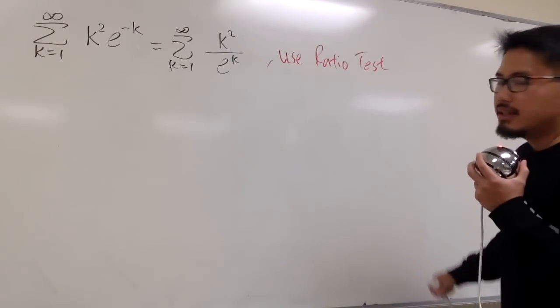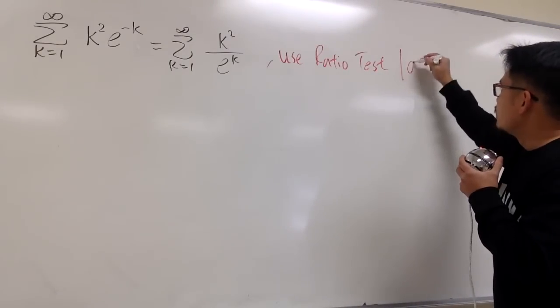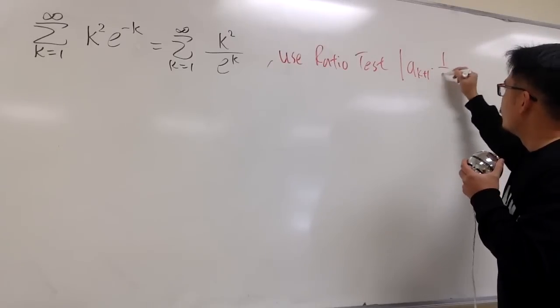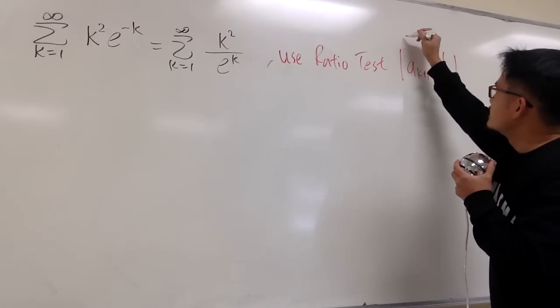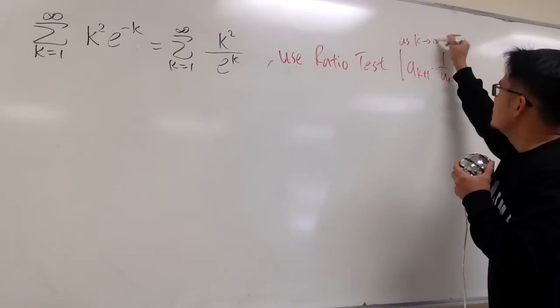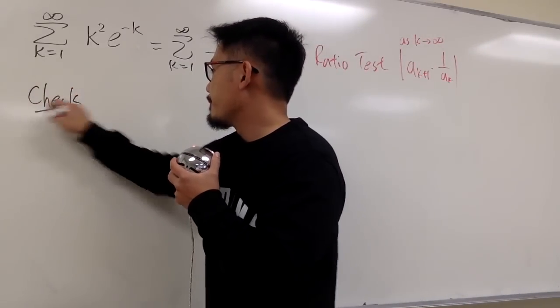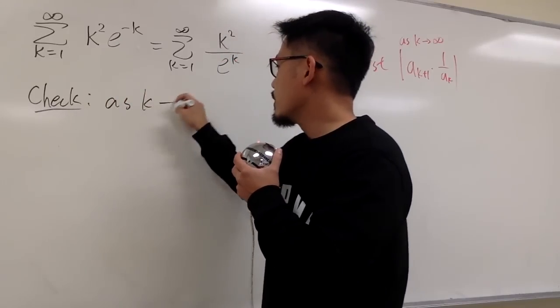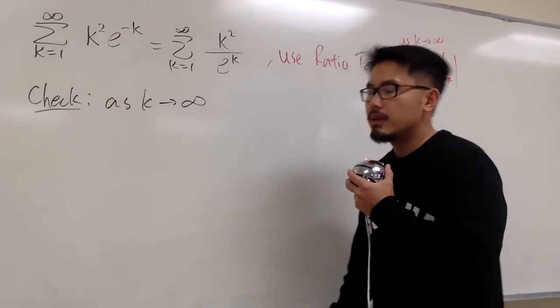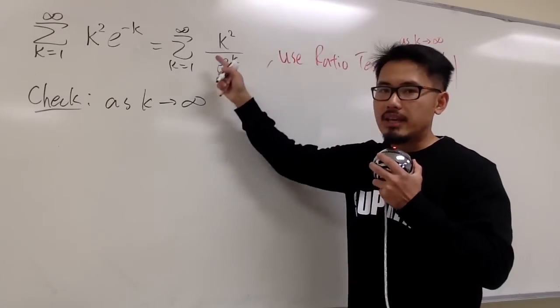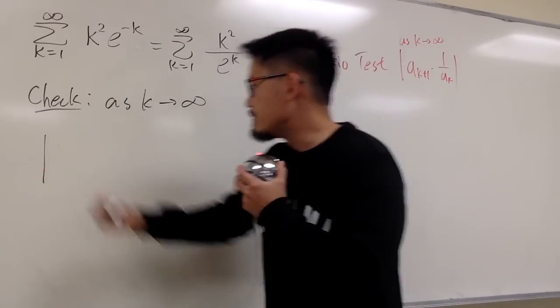Ratio test in action, and we have to work out a_k+1 times 1 over a_k, and take the limit as k goes to infinity, right? So we'll get to work. Check. As k goes to infinity, and I'm just going to use this as my a_k form. So let me take the absolute value.